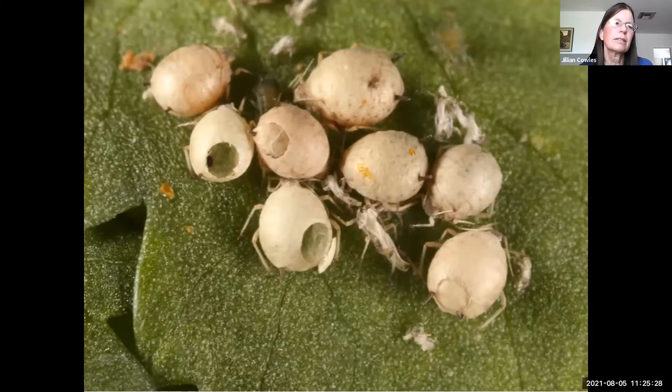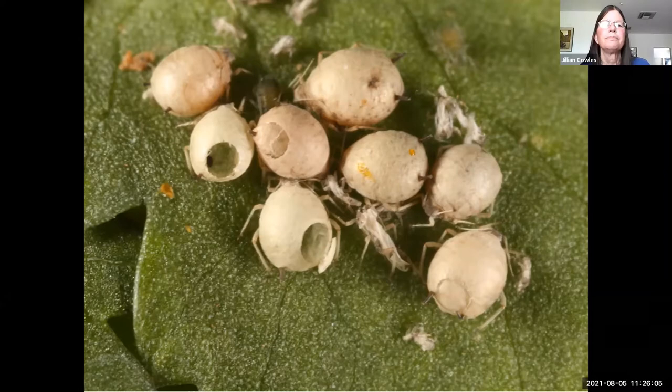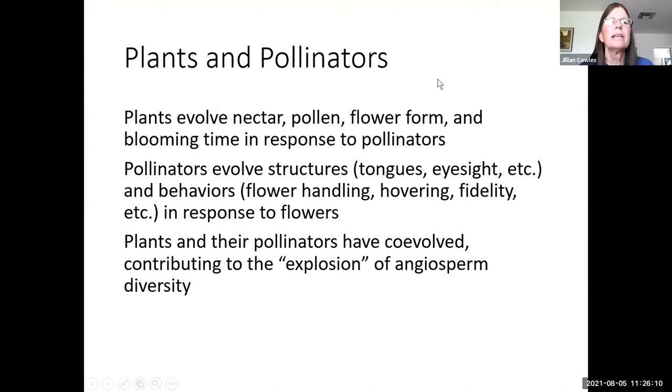The interesting thing about indirect defenses is that the plant detects the saliva of the herbivore and thereby knows what kind of volatiles to release to call in the correct predators and parasitoids. This is all fine-tuned by the plant in response specifically to the herbivore feeding on it — a really exquisite case of co-evolution between the plant and the parasitoids and predators that help go after the herbivores.